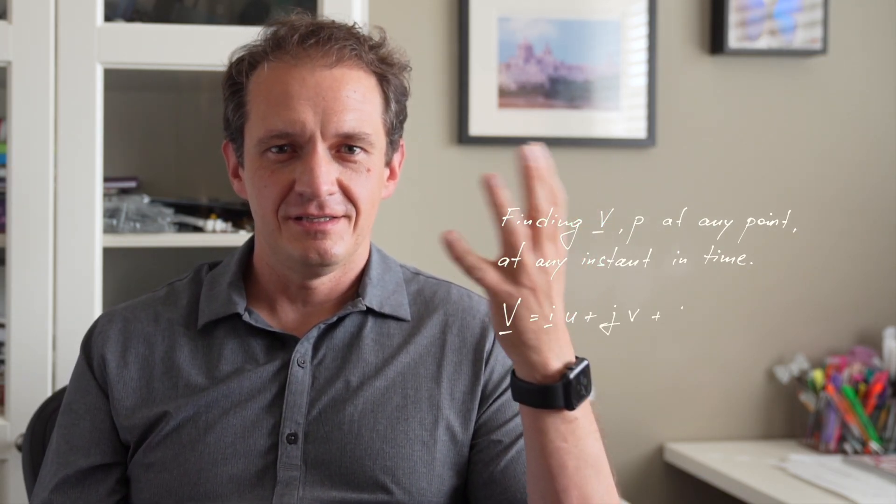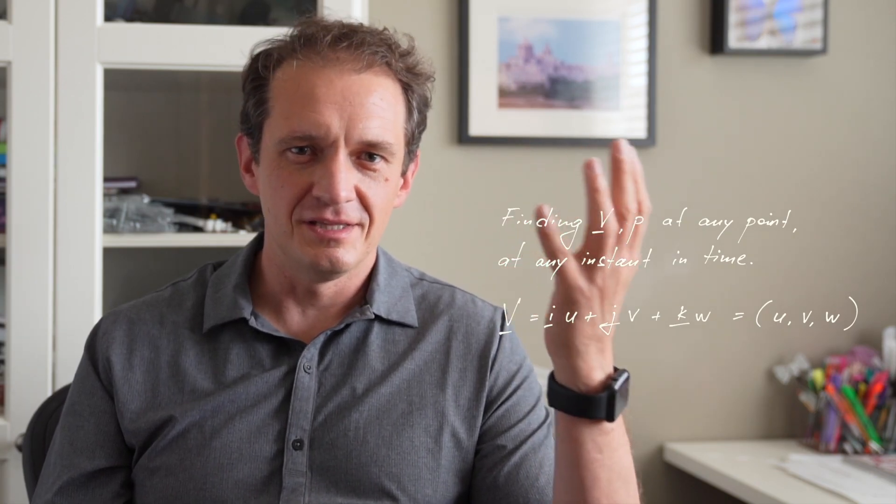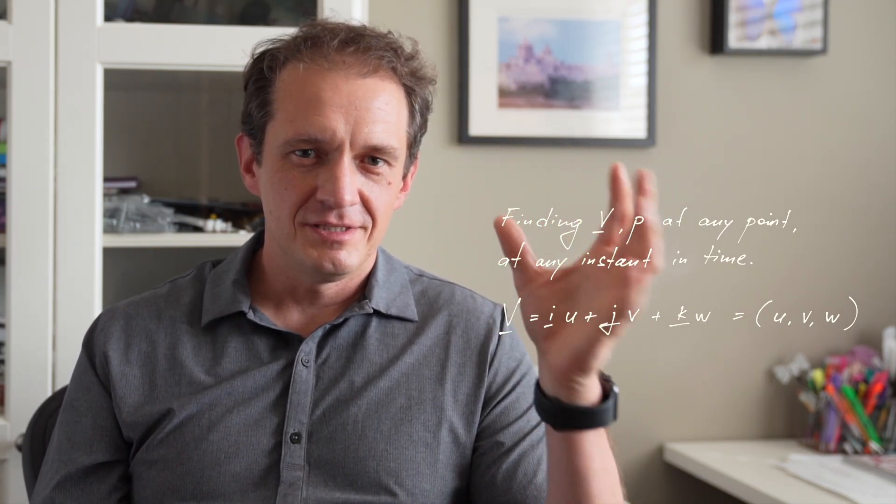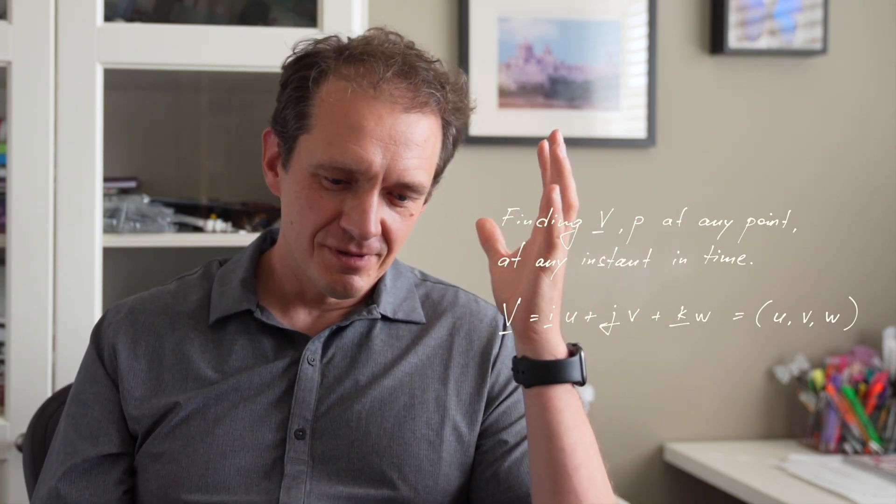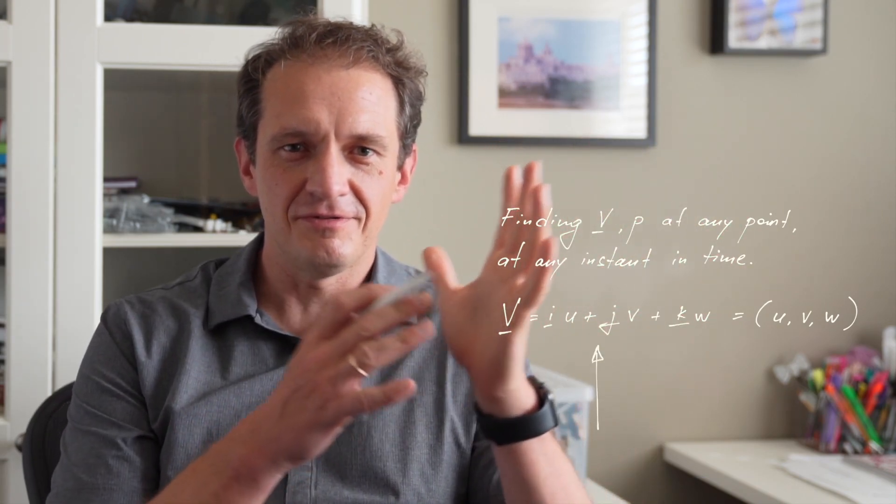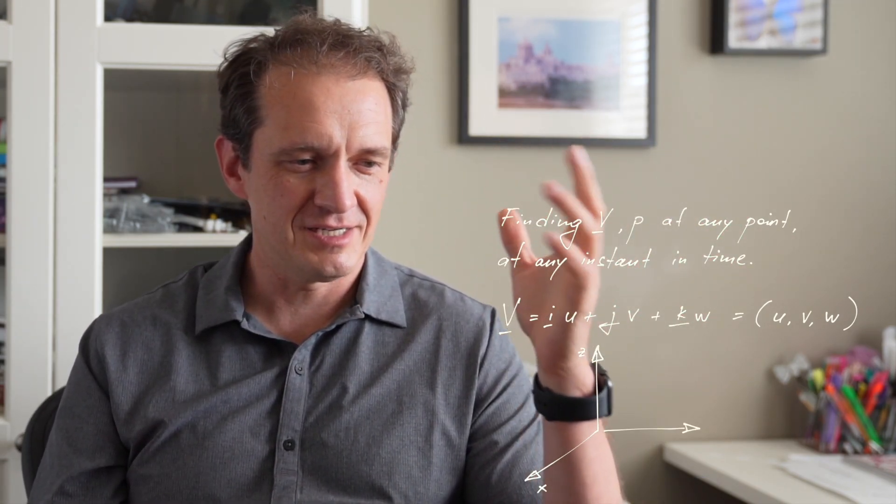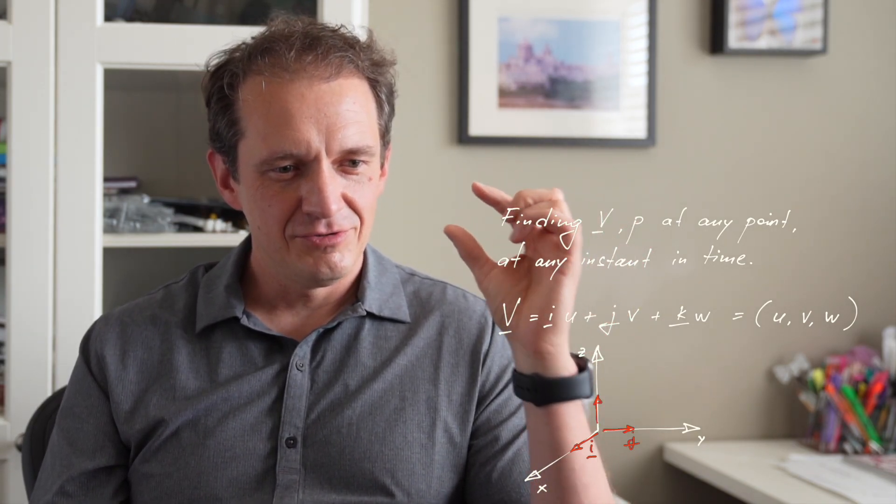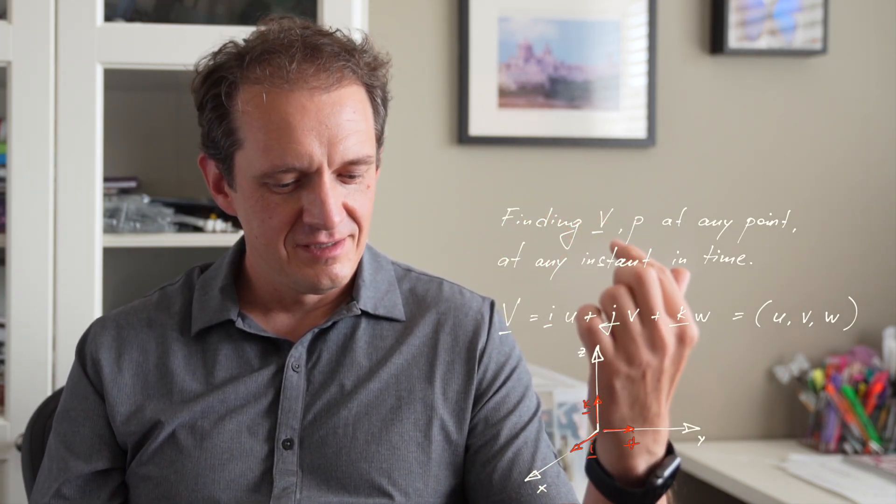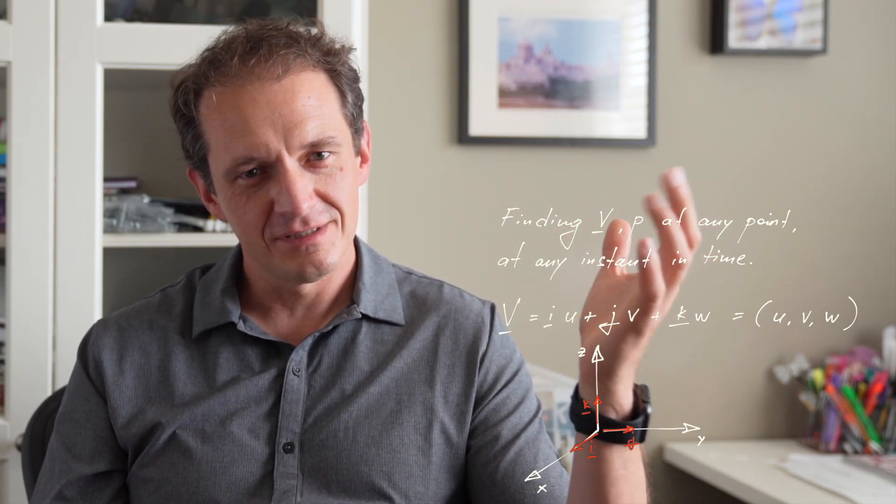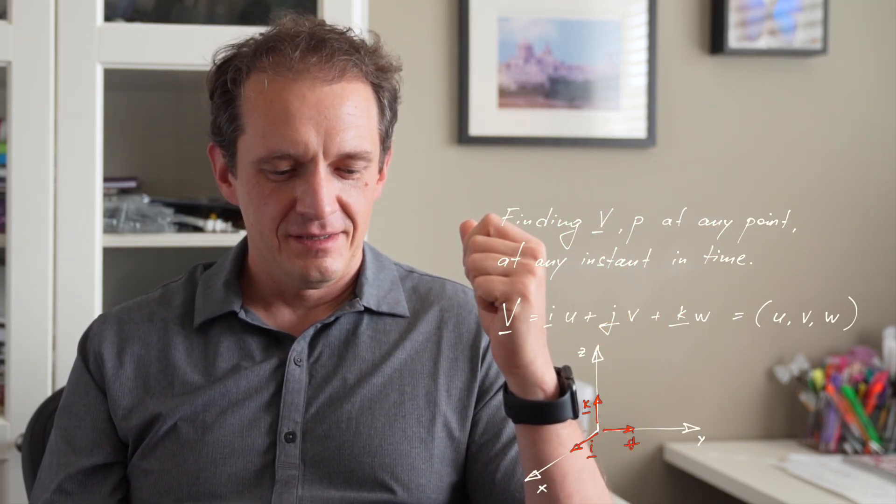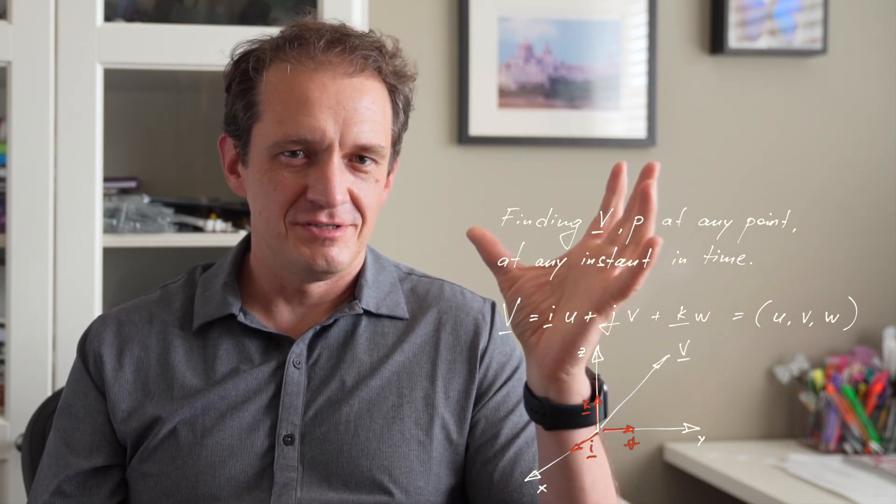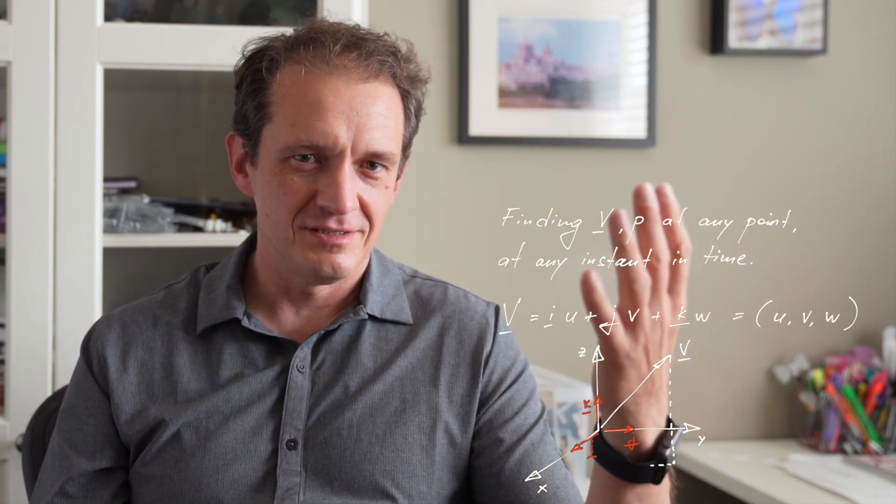The velocity is a vector; it has three components u, v, and w, and can be written in Cartesian form as follows. If we have three Cartesian axes x, y, and z and the unit vectors i, j, and k corresponding to these axes, then the projections of the velocity vector V on the coordinate axes are the velocity components u, v, and w.